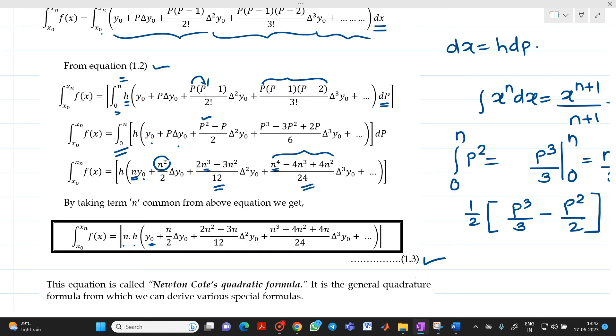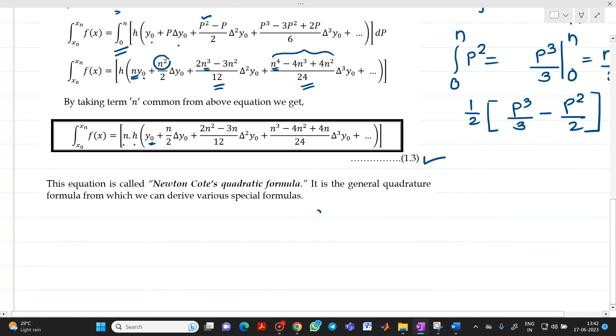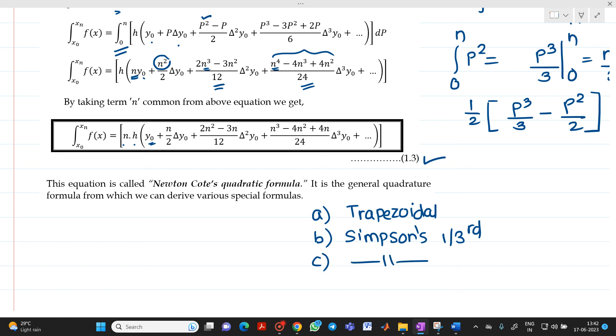It is a general quadrature formula from which we are going to derive various special formulas which include first, trapezoidal rule which will be used for numerical integration. Second is Simpson's one third rule, and third is Simpson's 3 by 8.